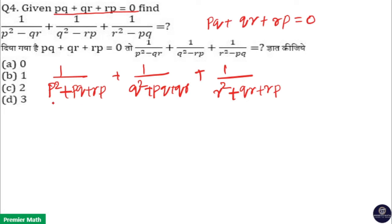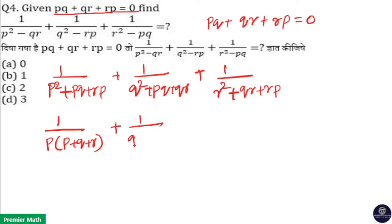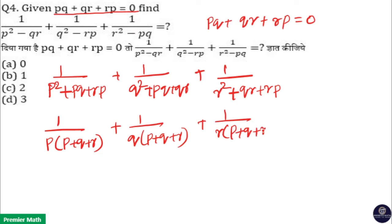Now in the first term, p is common, so it becomes 1/(p(p + q + r)). In the second term, q is common, so it becomes 1/(q(p + q + r)). In the third term, r is common, so it becomes 1/(r(p + q + r)).